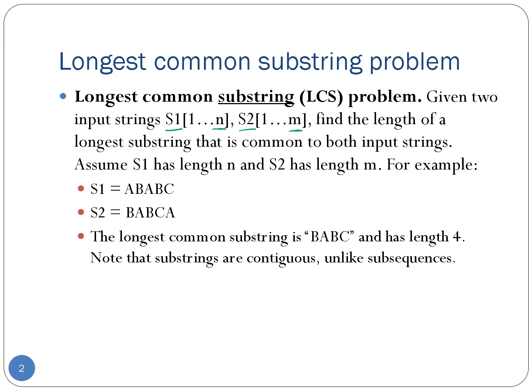Let's take an example to understand this. Let's say our s1 is the string a, b, a, b, c and s2 is the string b, a, b, c, a. There are many substrings that are common to both s1 and s2. For example, 'a, b' is in s1 and 'a, b' is also part of s2. Similarly, 'b, c' is a part of s1 and 'b, c' is also part of s2. Likewise, there are many common substrings to s1 and s2.